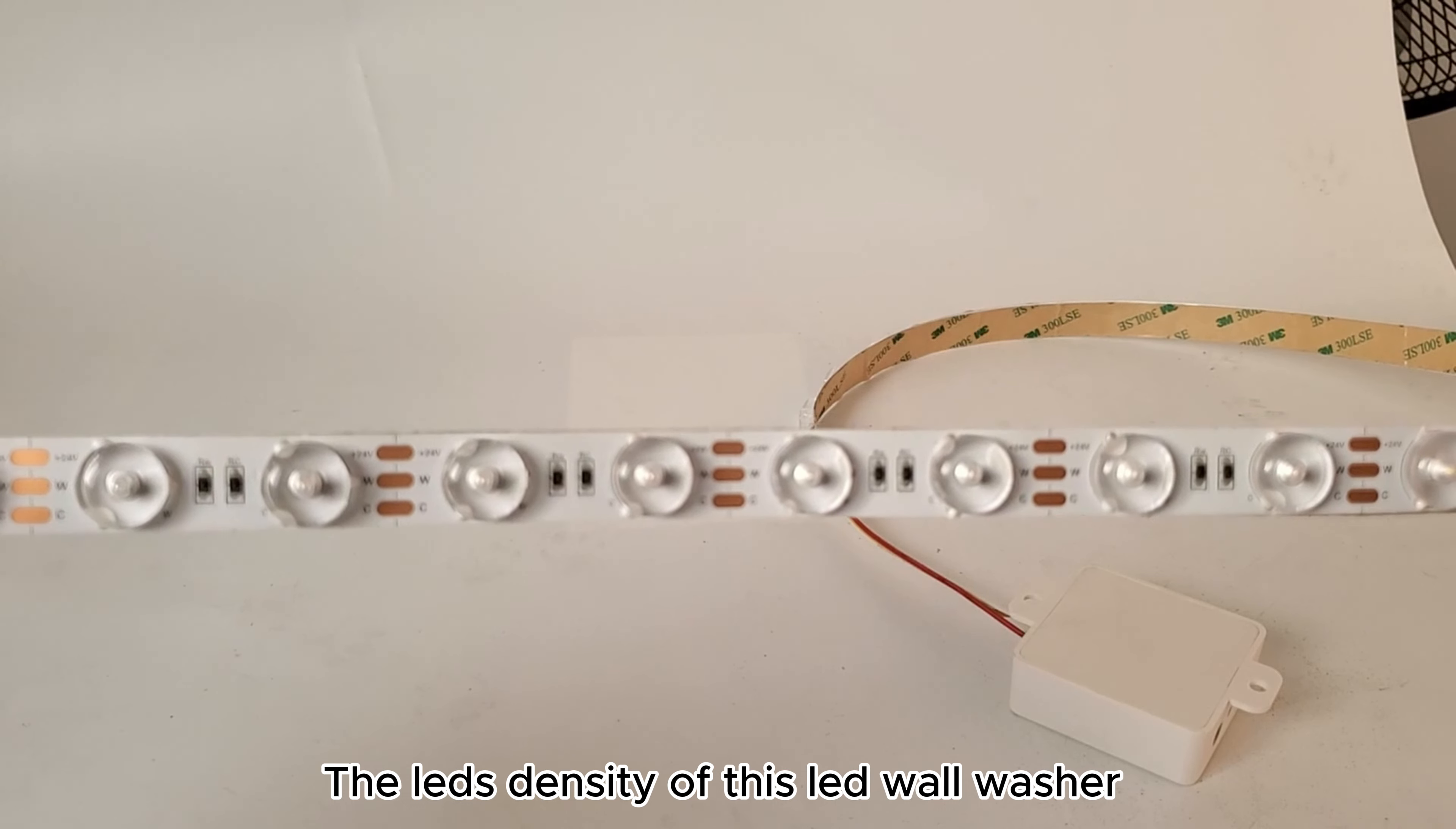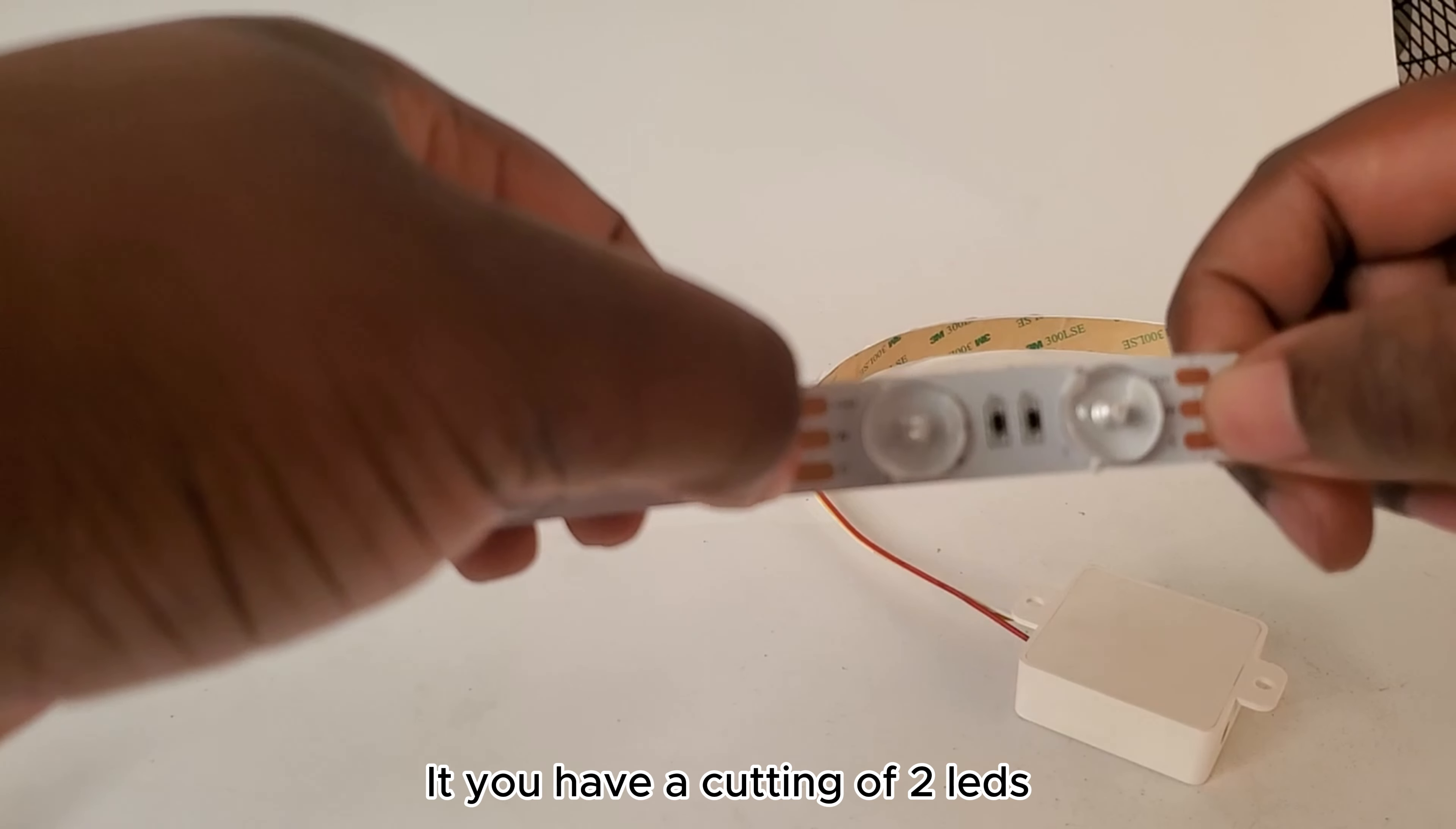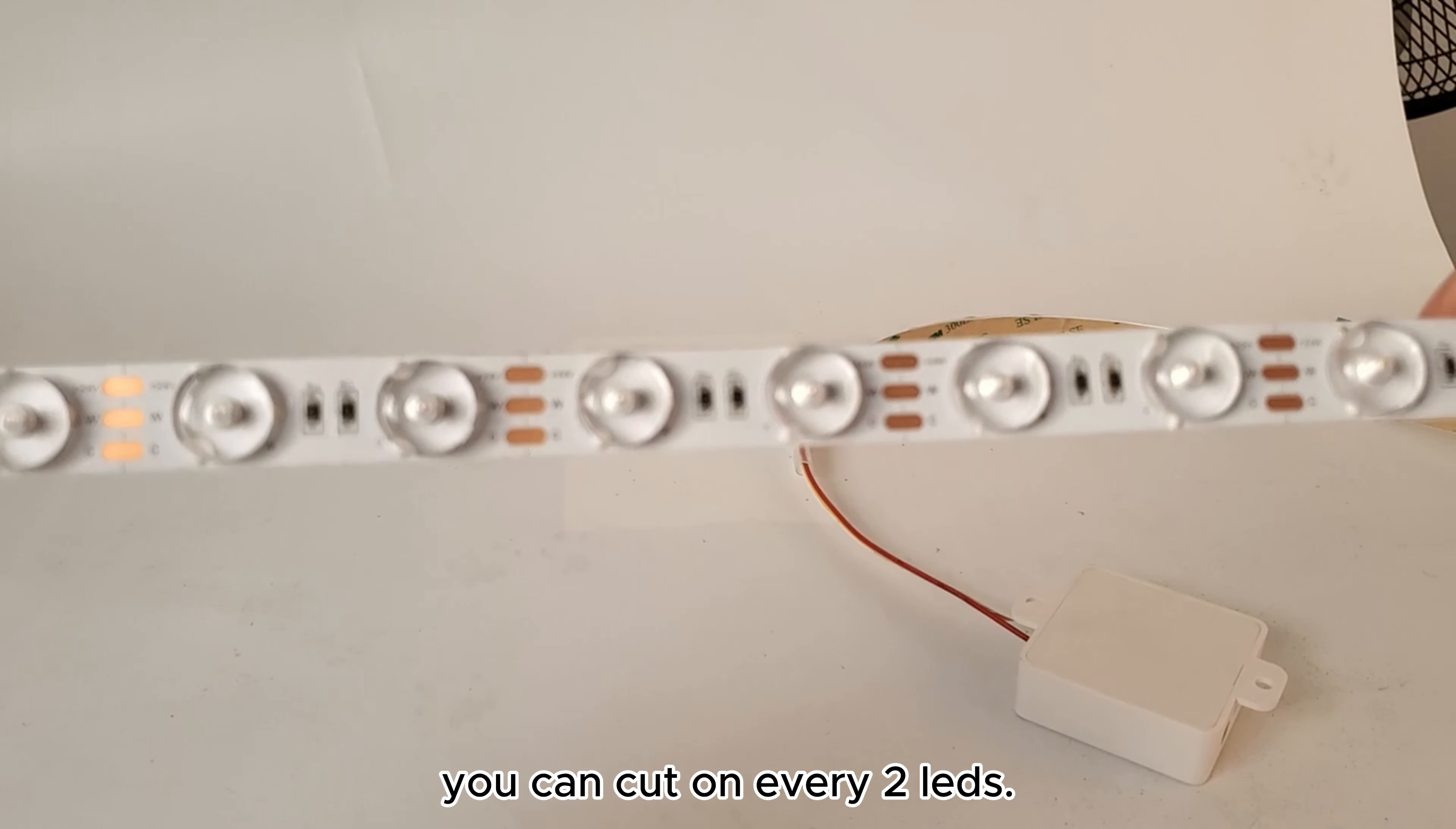The LED density of this LED wall washer is 36 LEDs per meter. It has a cutting unity of two LEDs so you can cut on every two LEDs.